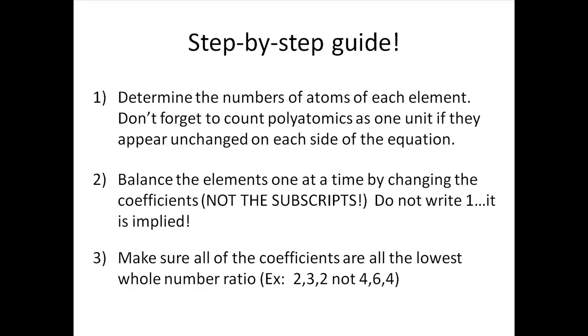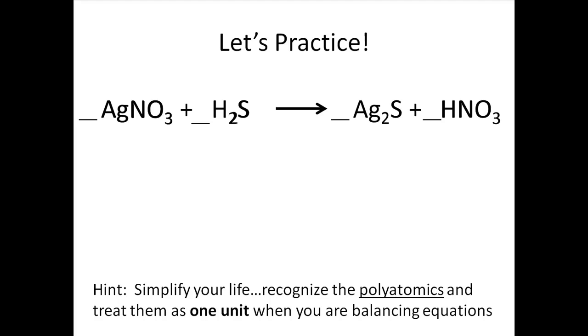Lastly, make sure all of the coefficients are the lowest whole number ratio. For example, if the coefficients for the equation end up being 4, 6, and 4, you can simplify them down to 2, 3, and 2. Think you got it? Let's try one for practice.